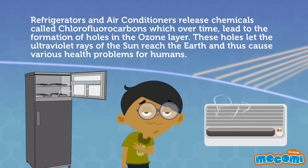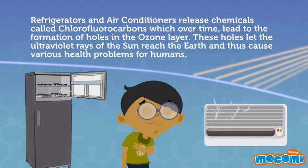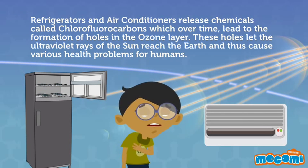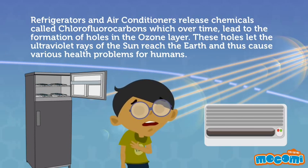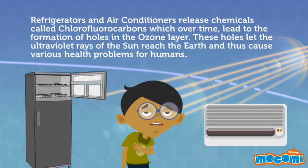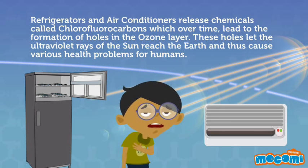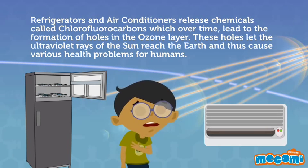Refrigerators and air conditioners release chemicals called chlorofluorocarbons, which over time lead to the formation of holes in the ozone layer. These holes let the ultraviolet rays of the sun reach the earth, and thus cause various health problems for humans.